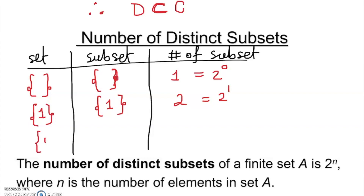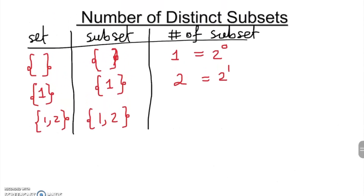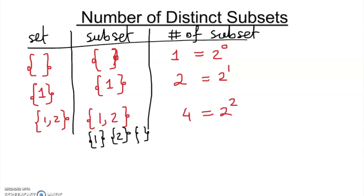If a set has two elements, say {1, 2}, let's list the subsets: {1, 2}, {1}, {2}, and the empty set. That gives us four — which equals 2 to the power 2. That is the reasoning behind the pattern.